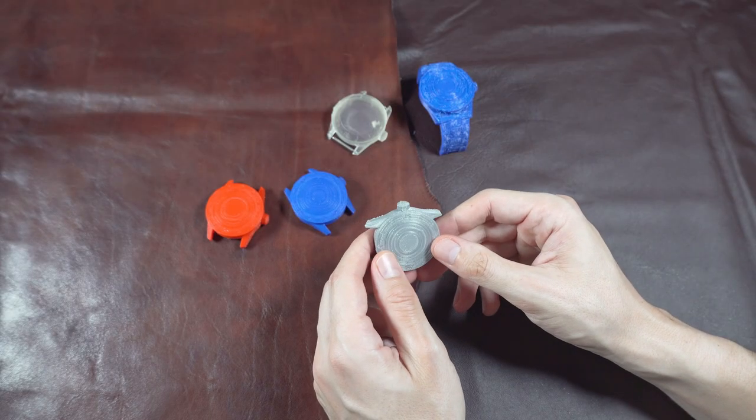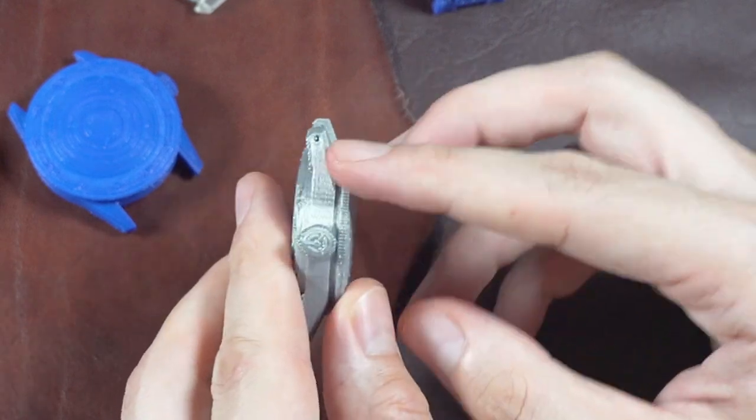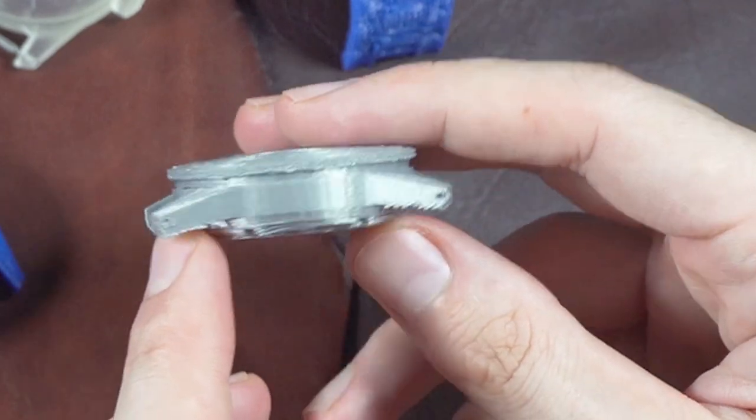This watch doesn't have crown guards. The lugs are drilled. They are curved and thin for a nice modern look.